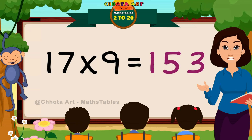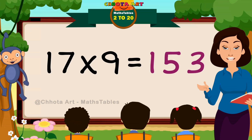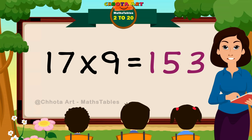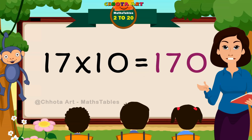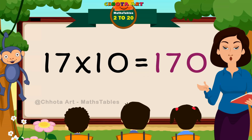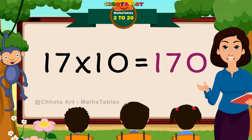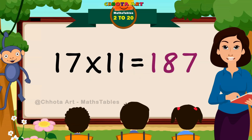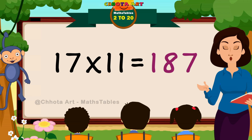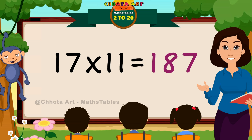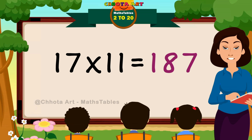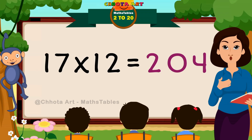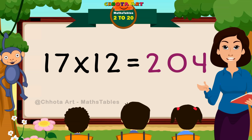Seventeen nines are hundred and fifty-three. Seventeen tens are hundred and seventy. Seventeen elevens are hundred and eighty-seven.